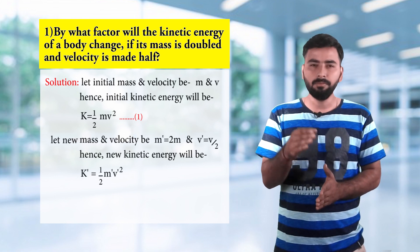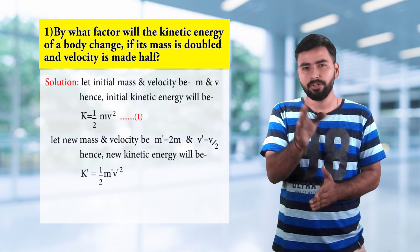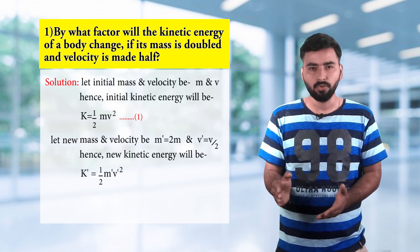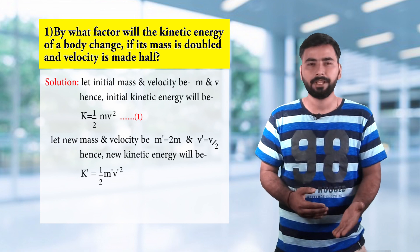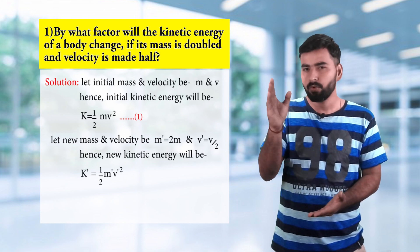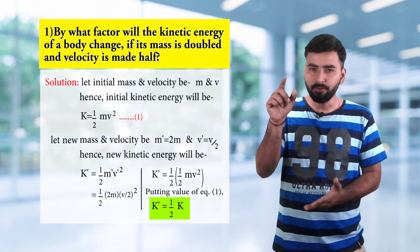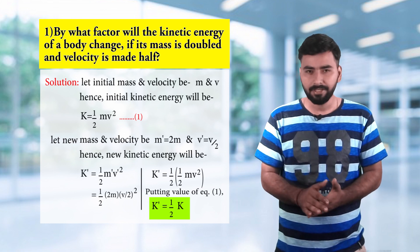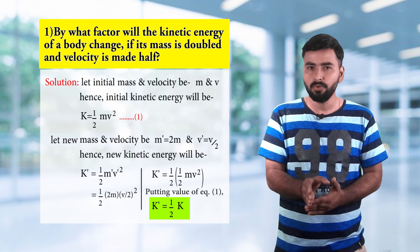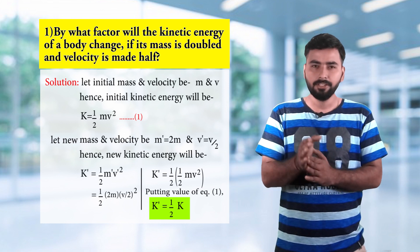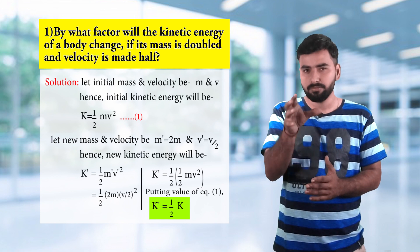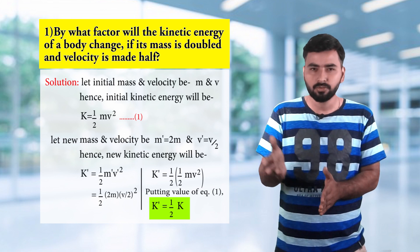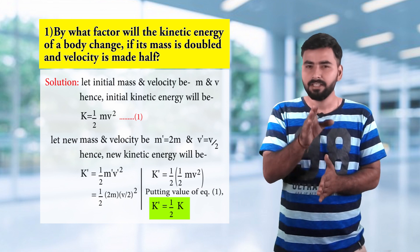Let the new mass be m dash, so m dash equals 2m. The new velocity v dash will become v upon 2. The new kinetic energy K dash will become half m dash v dash square, that is half of 2m into v by 2 the whole square. This becomes 1 upon 4 mv square, which we can write as 1 upon 2 into half mv square. From equation 1, the new kinetic energy K dash becomes half of the original kinetic energy K.